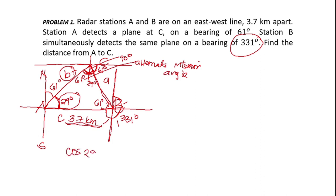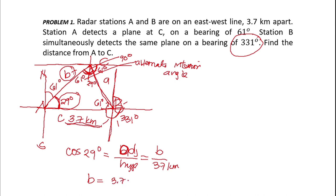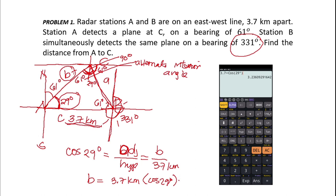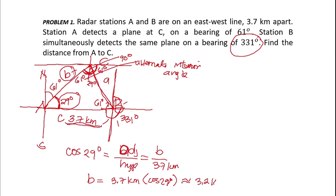Cosine 29 degrees equals adjacent B over hypotenuse 3.7 km. Cross-multiplying: B equals 3.7 km times cosine of 29 degrees. Calculating in a calculator, the result is approximately 3.2 km. We express this in two significant figures because the given data has two significant figures.